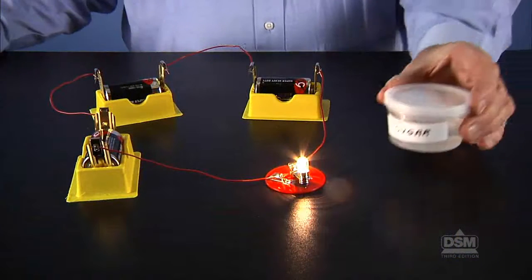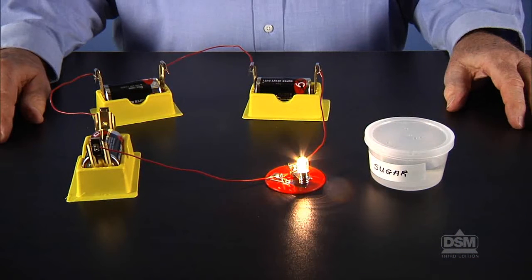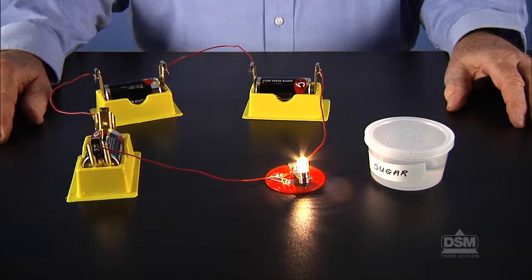Next, construct a three battery, one bulb circuit to test the liquids. Place the circuit next to one of the plastic cups of liquid.